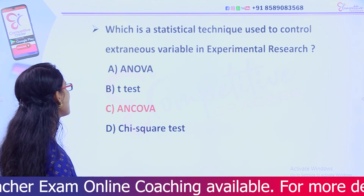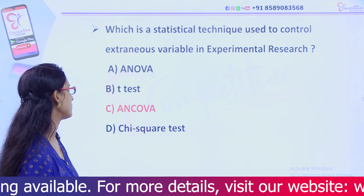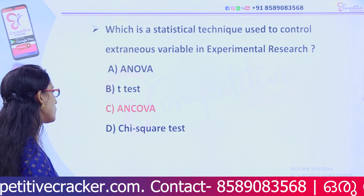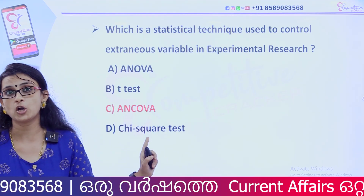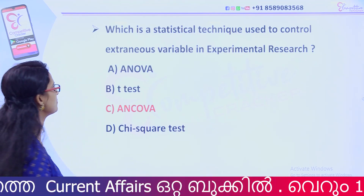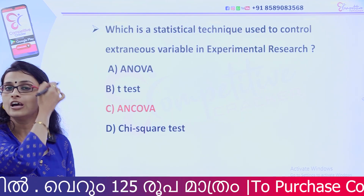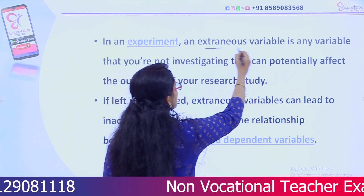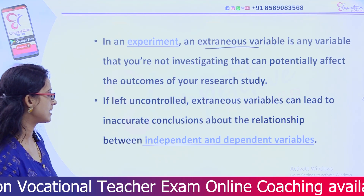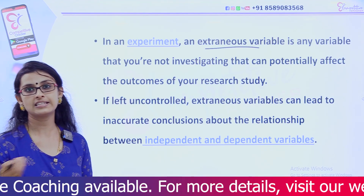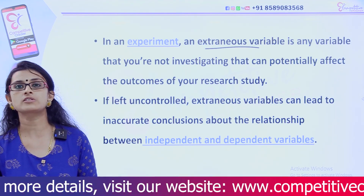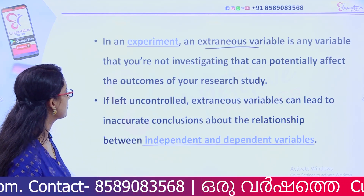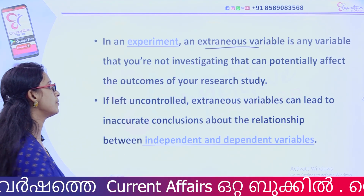Which statistical technique is used to control extraneous variables in experimental research? Option A, ANOVA; Option B, T-test; Option C, ANCOVA; Option D, Chi-square test. The answer is ANCOVA — Analysis of Covariance. When we conduct an experiment, extraneous variables arise. Extraneous variables are any variables you are not investigating that can potentially affect the outcome of your research study.